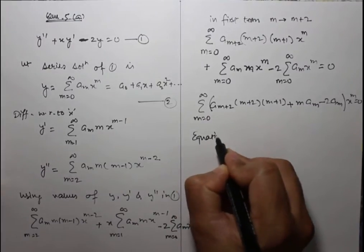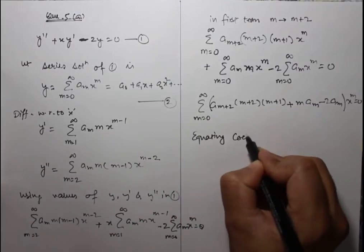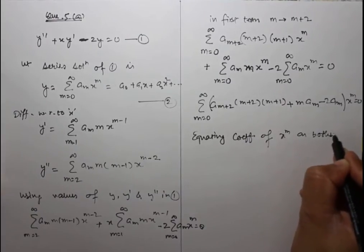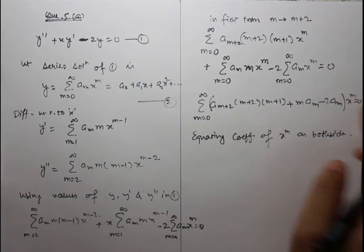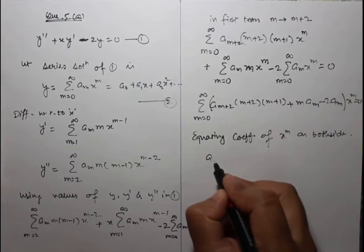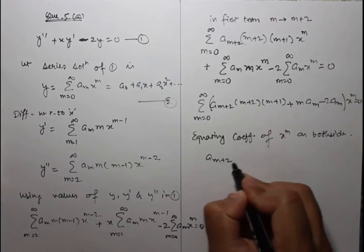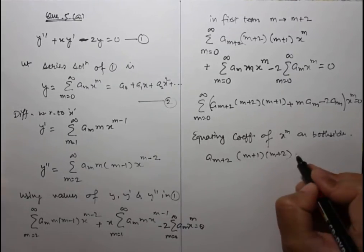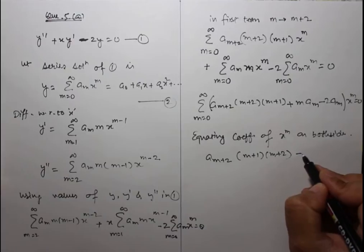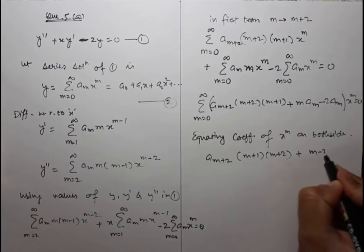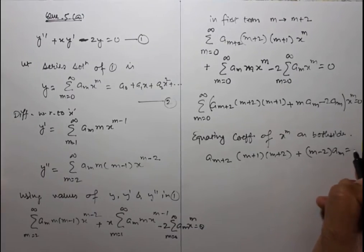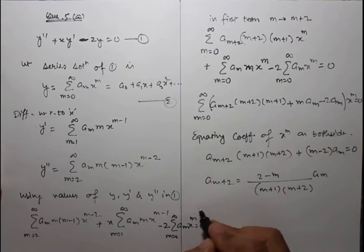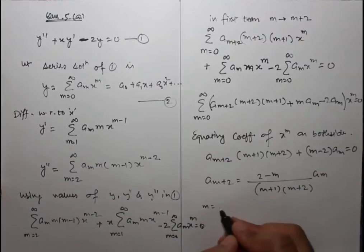Equating the coefficient of x^m on both sides to zero gives: a_(m+2)(m+1)(m+2) + (m-2)a_m = 0, for m = 0, 1, 2, ...